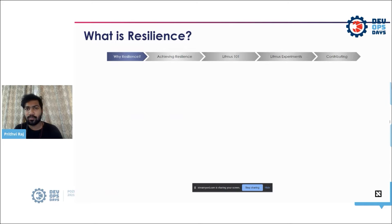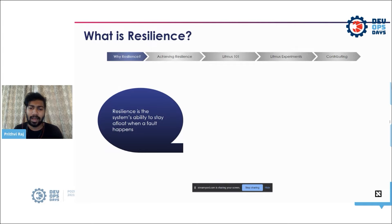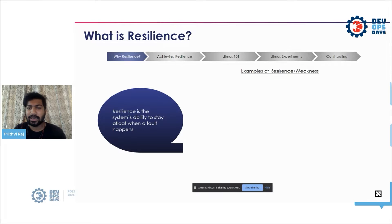Before we move on to chaos engineering, let us understand what resilience is — specifically, what resilience means in the Kubernetes paradigm. Resilience is essentially whether your system can withstand an outage or downtime — if the system stays afloat irrespective of a fault happening, that is where resiliency comes into play. But what are examples of weaknesses in a Kubernetes native system?